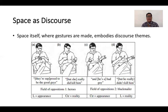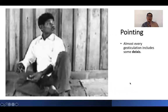Discourse and gestures, or gestures when analyzed according to space, are twofold things we need to consider in discourse analysis. Pointing is also a well-known gesture here in the Philippines. Almost every gesticulation includes some deixis — meaning reference. For example, here in the Philippines, we are fond of using pointing, or pouting our lips, to indicate the location or direction of something when asked where something is found.